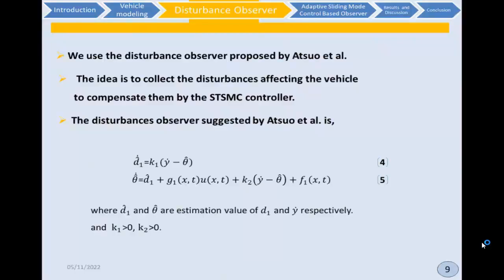Disturbance Observer. We use the disturbance observer proposed by Atsuo et al. The idea is to collect the disturbances affecting the vehicle to compensate them by the super-twisting sliding mode control. The disturbance observer suggested by Atsuo et al. is represented by this equation, where d1 hat and theta hat are estimation values of d1 and y-dot respectively, and k1 and k2 are greater than zero.